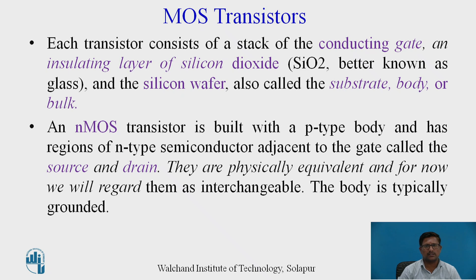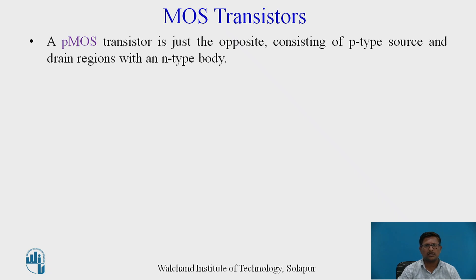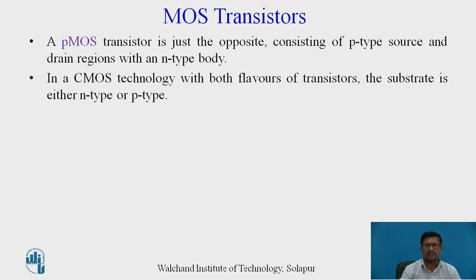An NMOS transistor is built with a P-type body, and a PMOS transistor is built with an N-type body. Based on this, we can identify which is NMOS or PMOS. The regions of N-type semiconductor adjacent to the gate are known as source and drain. Source and drain are interchangeable since they are essentially the same type of terminal, and the body is typically grounded. A PMOS transistor is just the opposite, consisting of P-type source and drain regions with an N-type body.